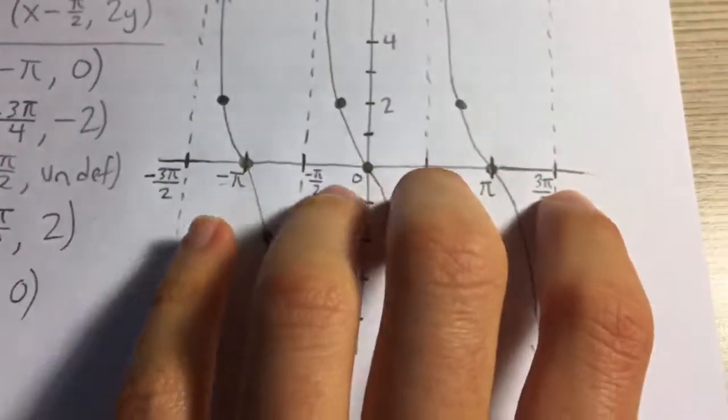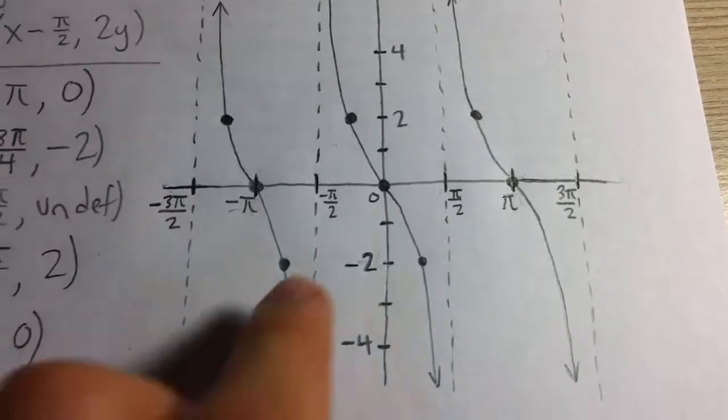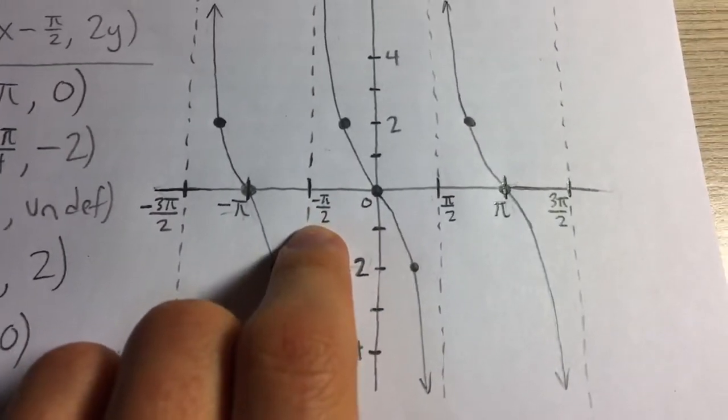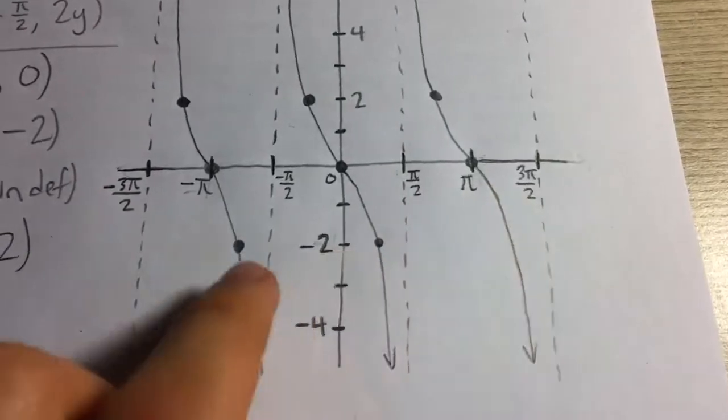we know there's an asymptote here at negative pi over 2, you just add pi to find the next asymptote.